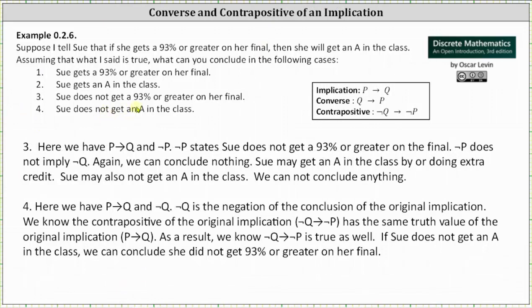Case three: Sue does not get a 93 percent or greater on her final. Here we have 'if p then q' and not p as true statements. Not p — Sue does not get a 93 percent or greater — does not imply not q, so again we can conclude nothing. Sue may get an A by doing extra credit, or she may not get an A. By knowing not p is true, we can conclude nothing.